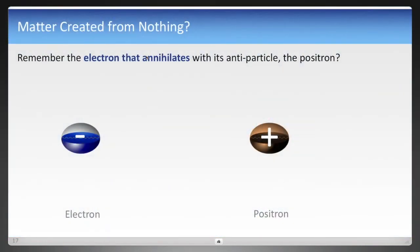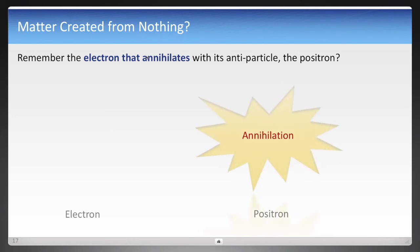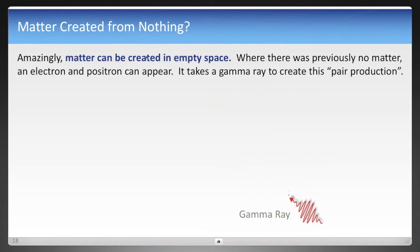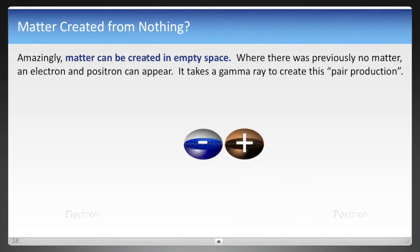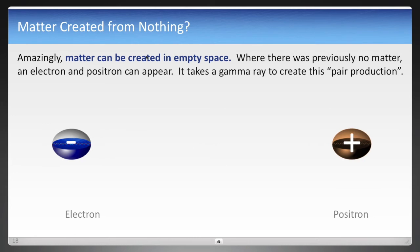I'll do one last one here, which is remember that electron that annihilates with the positron that we talked about earlier? Well, it seems to be gone. But here's a strange thing about it. Matter can be created from nothing. Now this doesn't happen for anything larger than the atom. But for subatomic particles, a gamma ray can hit nothing, absolutely nothing, in empty space. And all of a sudden, an electron and positron appear. This is a process known as pair production.